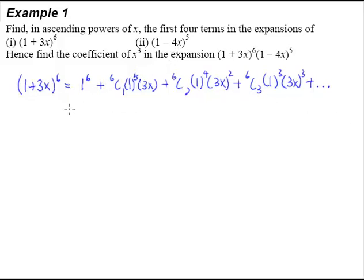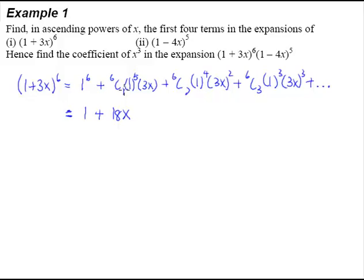What's left to do is to simplify what we have here. 1 to the power of 6 is obviously 1, because 1 multiplied by 1 no matter what the power, you always get 1. From the calculator, 6C1 is 6. So 6 multiplied by 3 gives us 18, so 18x. 1 to the power of 5 is also 1. 6C1 is 6, 7C1 is 7, 8C1 is 8, and so on. So the first 2 terms are actually very easy to work out.